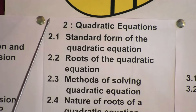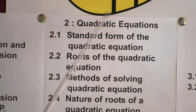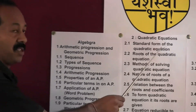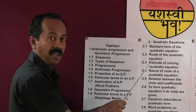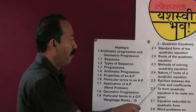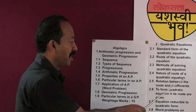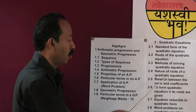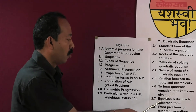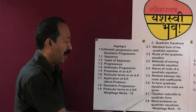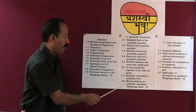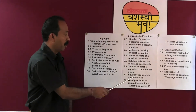Chapter 2: the name of the chapter is Quadratic Equations. The important contents are: Standard form of the quadratic equation, Roots of the quadratic equation, Methods of solving quadratic equations, Nature of roots of a quadratic equation, Relation between the roots and coefficients, To form a quadratic equation if its roots are given, Equation reducible to quadratic form, and Word Problems on quadratic equations. The weightage of marks for this chapter is 16.